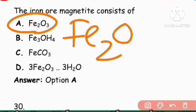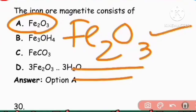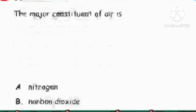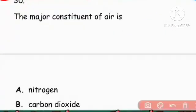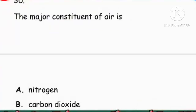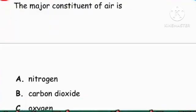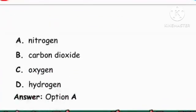Next question: The iron ore magnetite consists of Fe2O3. That formula is important — Fe2O3 is magnetite.